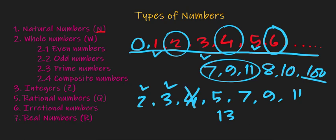5 is divided by 1 and itself, so this is a prime number. 7 is divided by 1 and itself only, so 7 is also a prime number.